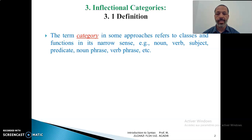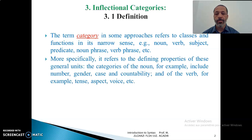Subjects, predicate, noun phrases, verb phrases — all these are called types of categories. More specifically, it refers to the defining properties of these general units. The categories of the noun, for example, include number, gender, case, and countability.